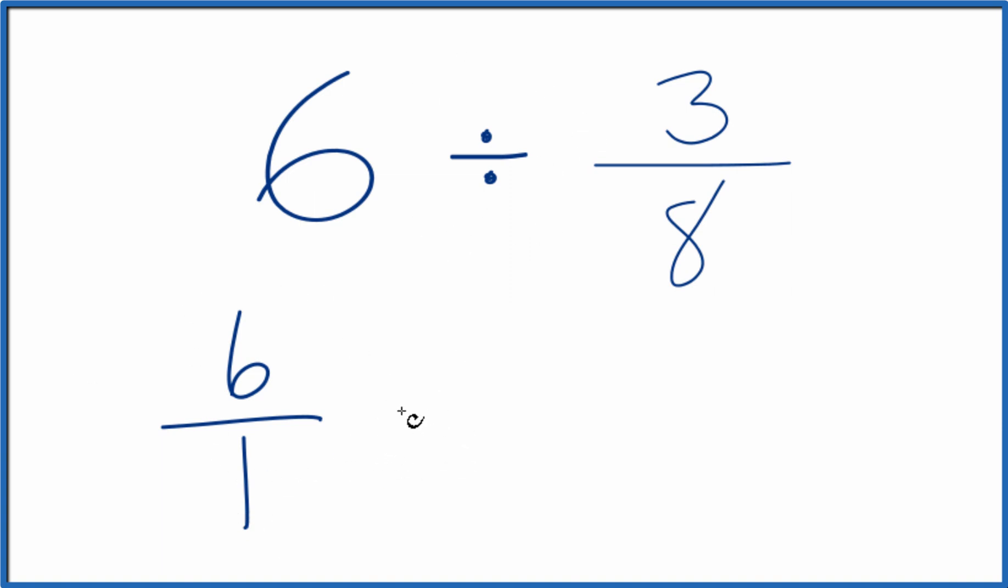And instead of division, let's multiply by the reciprocal of 3 eighths. To take the reciprocal for a number, we move the numerator to the bottom. The denominator, that goes up top. So we get 8 over 3, 8 thirds.